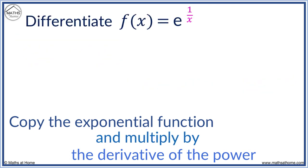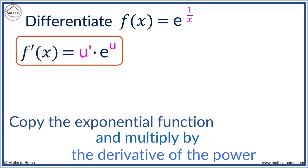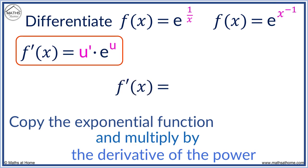Differentiate e to the 1 over x. Since we will need to differentiate 1 over x, we rewrite this as f of x equals e to the x to the minus 1, since 1 over x in index form is x to the minus 1. Now we use our rule. We copy e to the x to the minus 1. Now, we differentiate x to the minus 1. We bring down the minus 1 and subtract 1 from minus 1 to get minus 2. The derivative of x to the minus 1 is minus x to the minus 2.